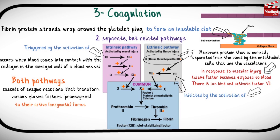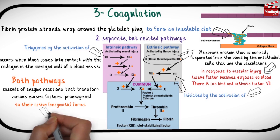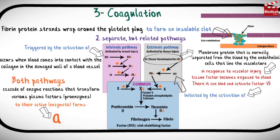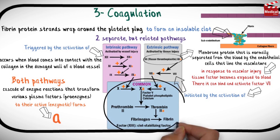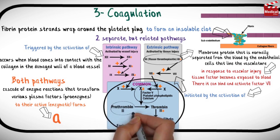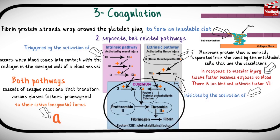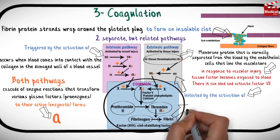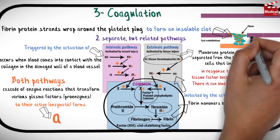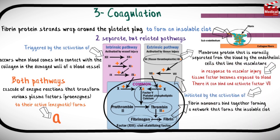Both pathways involve a cascade of enzyme reactions that transform various plasma factors — proenzymes — to their active enzymatic forms. Note that in the cascade, the active form of a clotting factor is the same as the factor number plus the letter 'a'. The final common sequence in both pathways involves a complex that includes activated factor 10, factor 5, platelet phospholipids, and calcium, which catalyzes the conversion of the serum protein prothrombin to thrombin. In turn, thrombin converts plasma fibrinogen to fibrin.